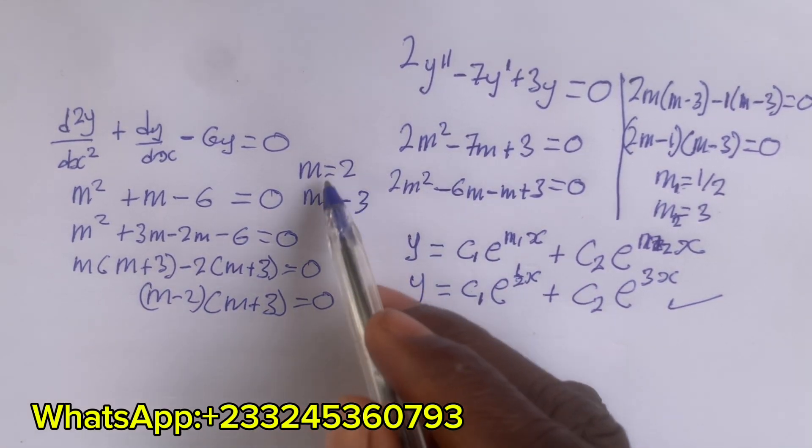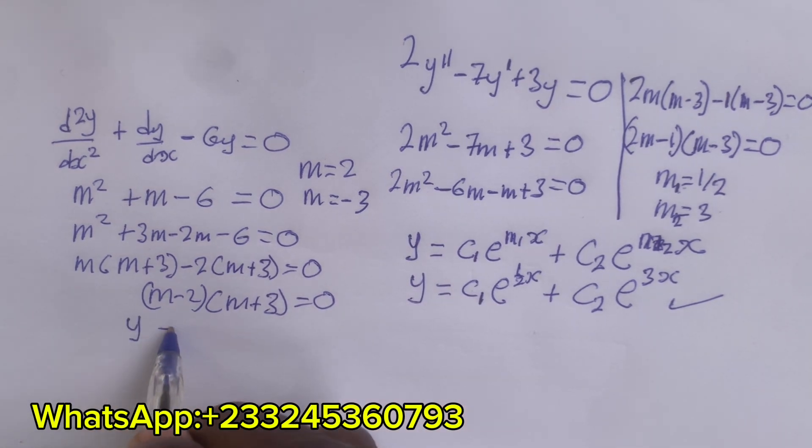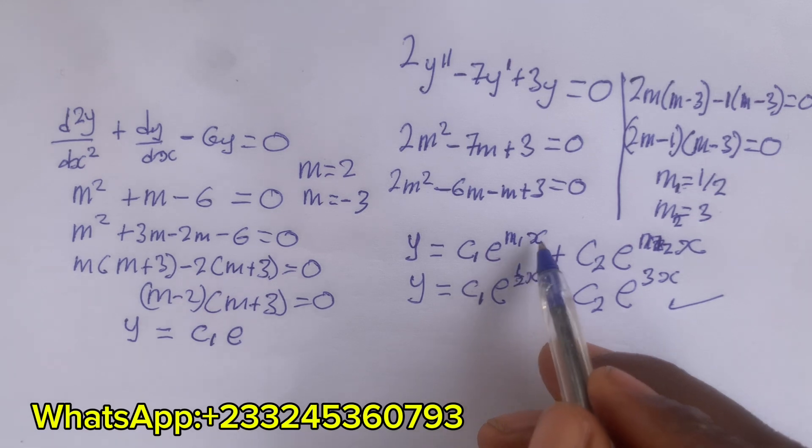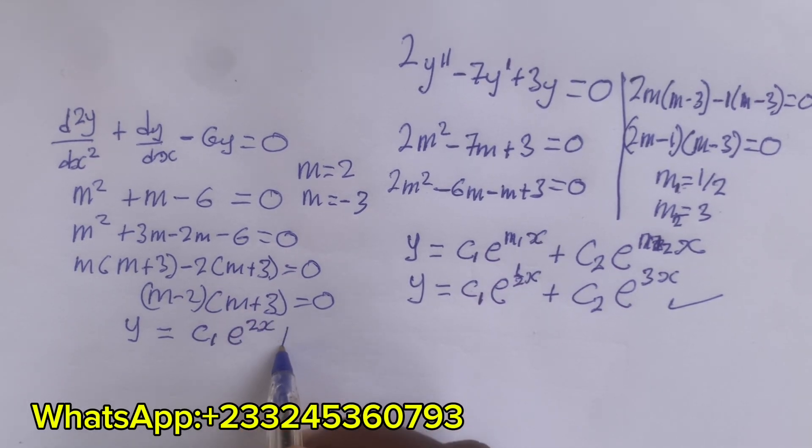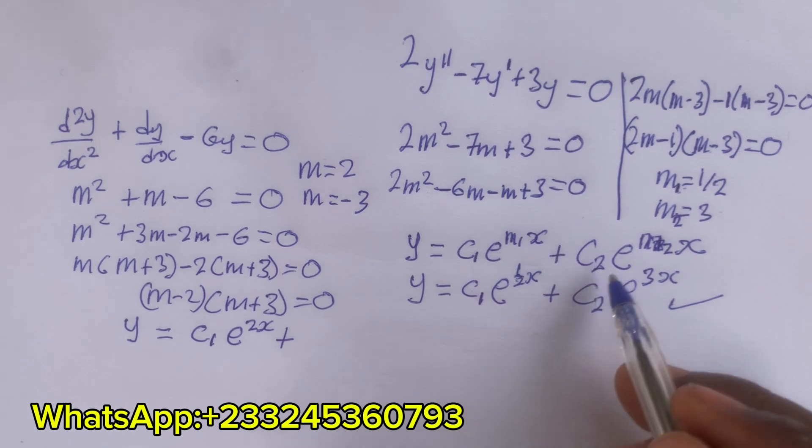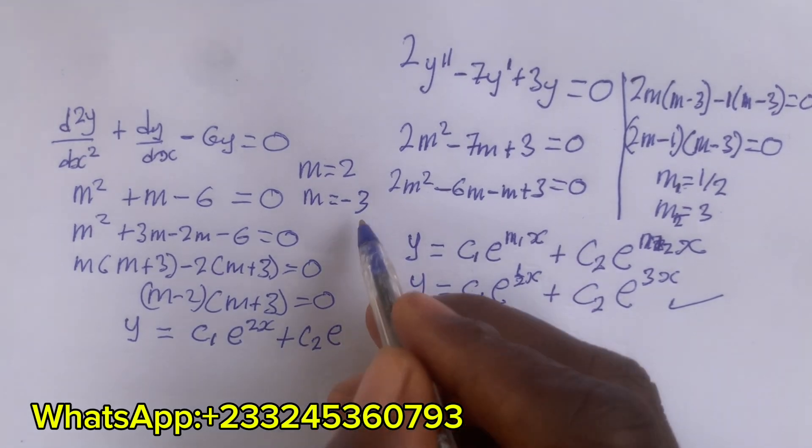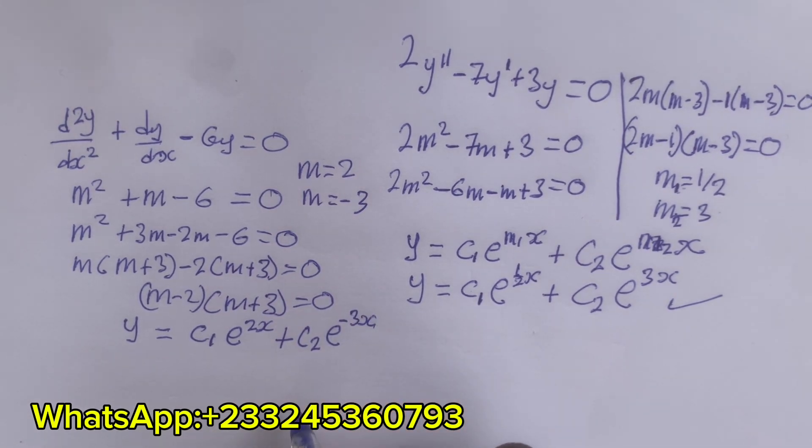You see that these roots are real and distinct. So you write the general equation as y = c₁e^(m₁x). So m₁, if it is 2, you take 2x plus c₂e^(m₂x). If it is -3, then write -3x in a very simple way.